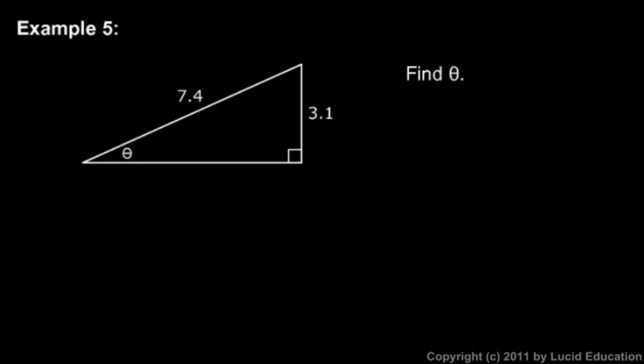So what trig function comes to mind when you have opposite and hypotenuse? Well the sine function should come to mind because sine of theta is the opposite side over the hypotenuse. So in this case, the sine of theta is 3.1 over 7.4.